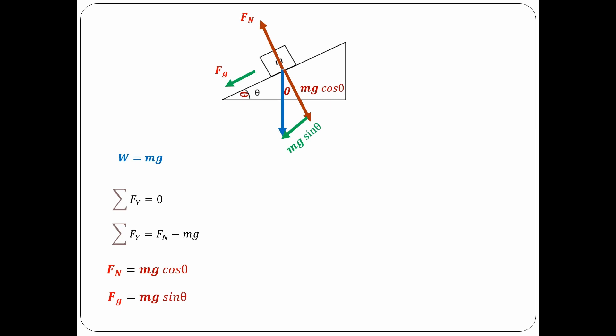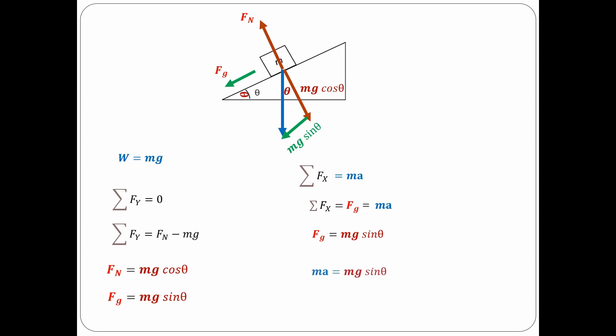Now let's say the block in the picture rests on a frictionless incline and you want to find the acceleration. How can we derive a formula in that kind of situation? We know that the force that makes the block accelerate is Fg. From Newton's second law, the summation of forces in the x direction is equal to mass times acceleration. Since the only force in the x direction is Fg, we have M times Ax equals Mg sin theta. M is cancelled, therefore the acceleration in the x direction is Ax equals g sin theta.